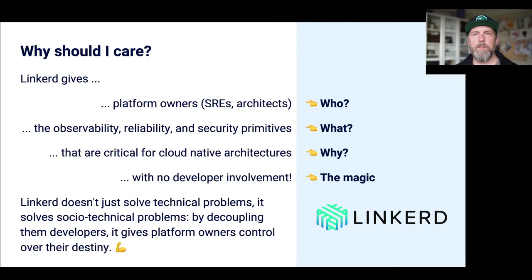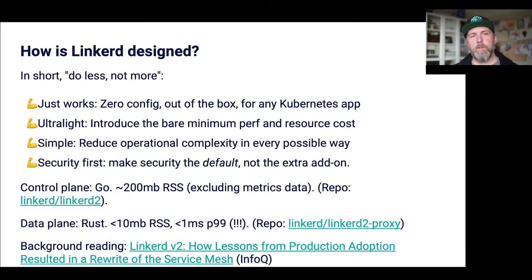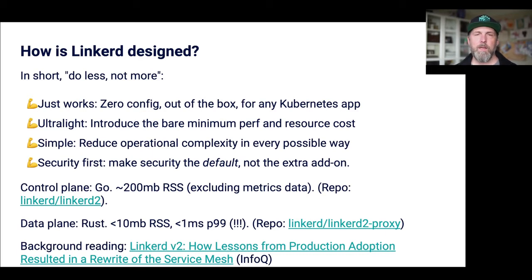Okay, let's talk a little bit about Linkerd's design philosophy. In short, I would say this is: do as little as possible. Linkerd should just work out of the box — you should be able to add Linkerd to a functioning Kubernetes application and the application should continue functioning. It should consume a minimum of resources: memory and CPU consumption should be as small as possible, and the latency it adds to your application should be as small as possible too. It should be simple — you as the operator should not have to wrestle with a thousand configuration options. And Linkerd should have security enabled out of the box, on by default. That's the big headline feature of 2.9 around mutual TLS, but I'll leave that for Tarun.